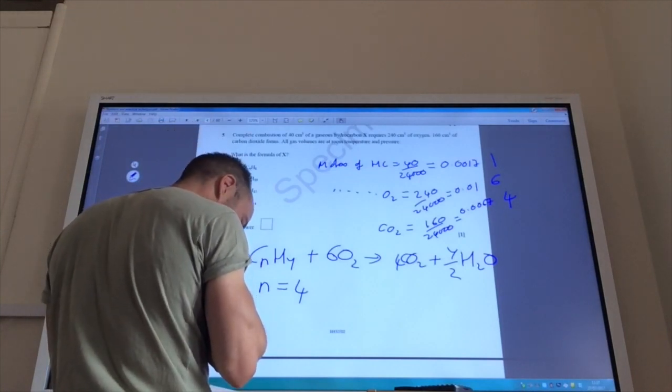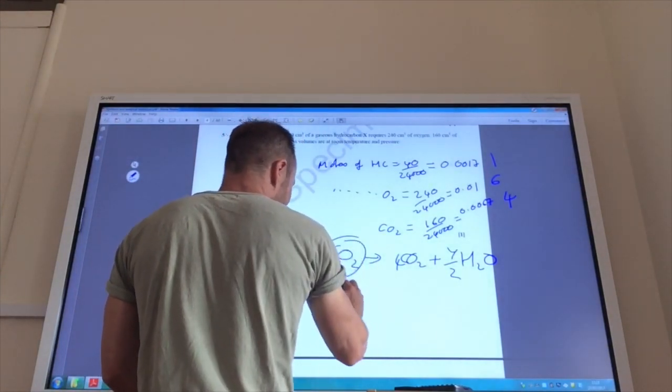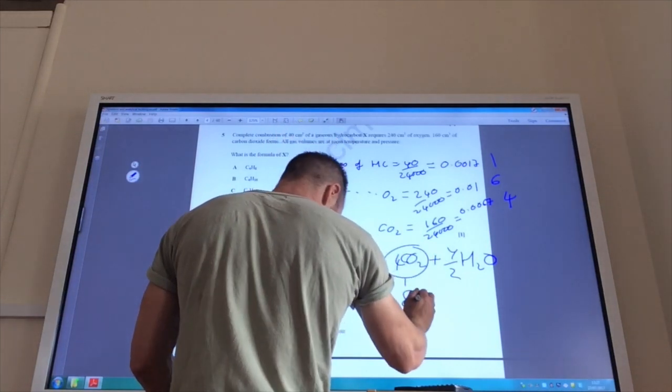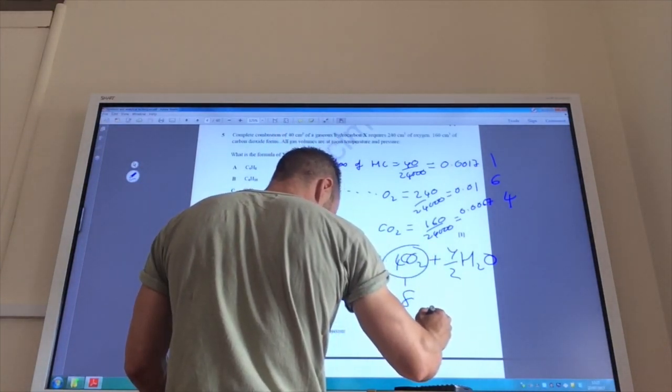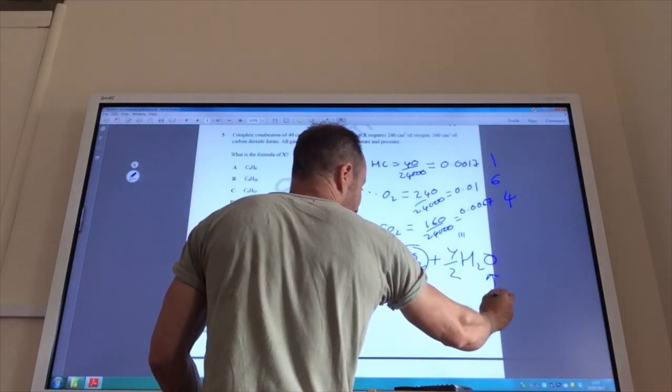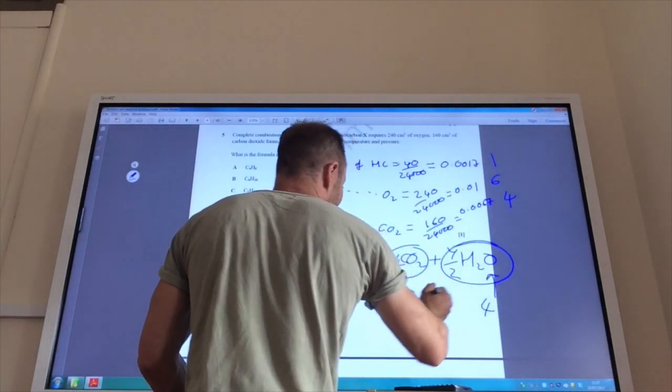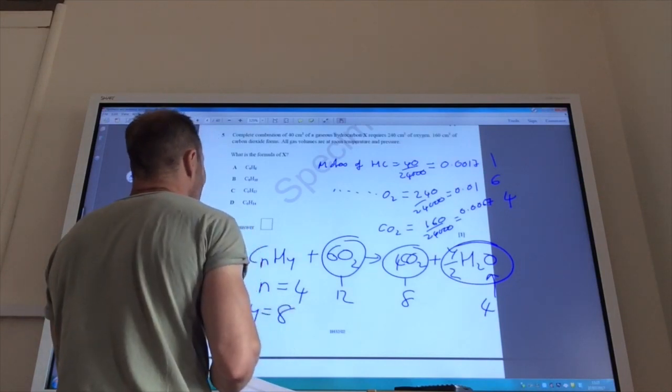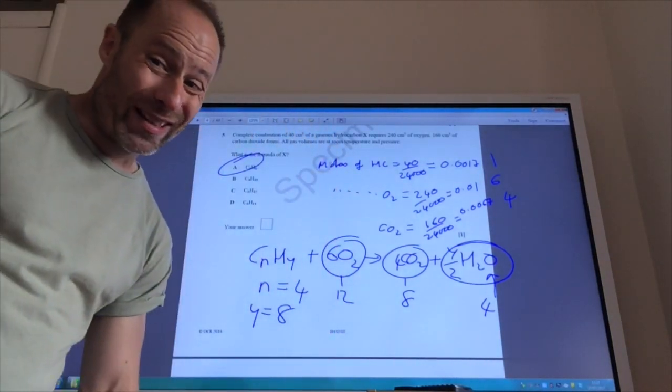What is Y going to be? Well, if you have a look at that, I've got 12 oxygens there. I have got eight oxygens there, which means that Y, so that means that this, I must have in total four oxygens coming from this expression here. So, Y must equal eight. And therefore, the answer is A. A little bit tricky, that one.